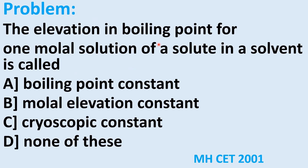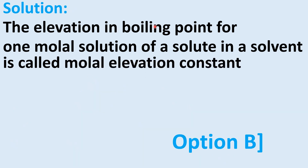The elevation in boiling point for one molal solution of a solute in a solvent is called: option A boiling point constant, option B molal elevation constant, option C cryoscopic constant, option D none of these. The answer is molal elevation constant — option B is correct.